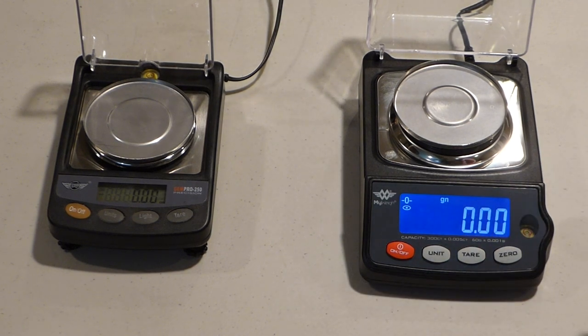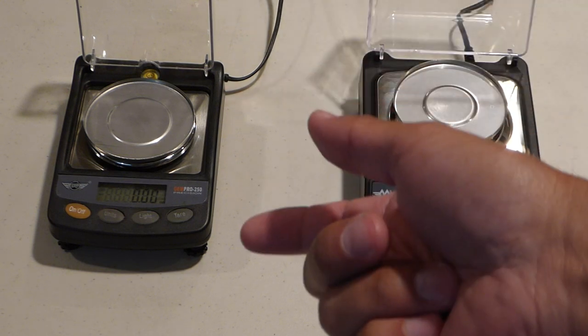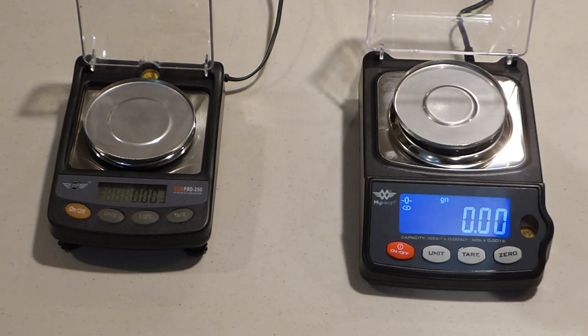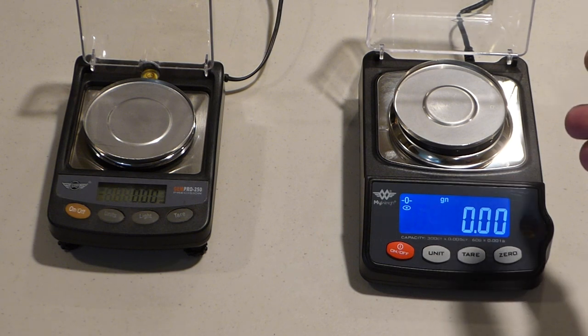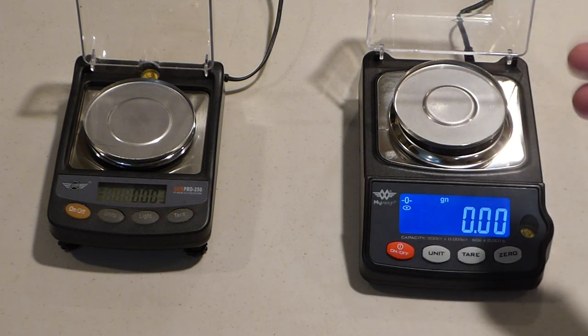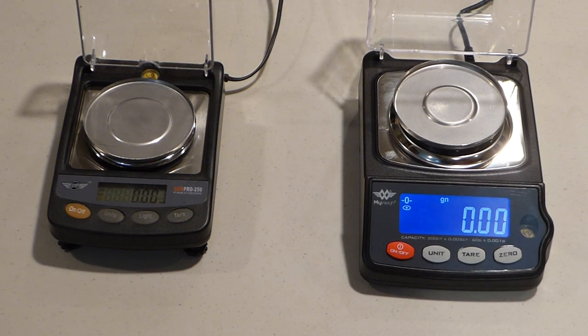That one actually goes to 60 grams, so it will allow you to weigh heavier objects than the old GEMPRO 250 while still maintaining the same resolution. That's a huge bonus, because normally to get a scale that holds more weight that maintains the resolution costs a lot more money. But in this case, GEMPRO is able to sell you the new scale for less money, same amount of accuracy, better ergonomics, and the weight capacity has gone up while maintaining the same resolution.